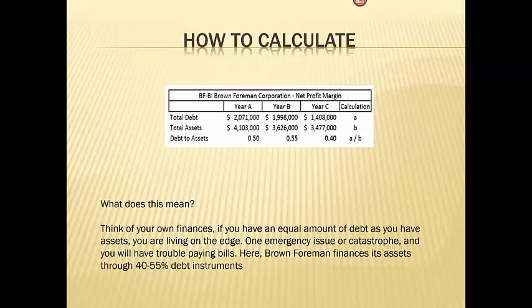When we do the calculation, Year A we have 0.5, Year B we have 0.55, and Year C we have 0.4.